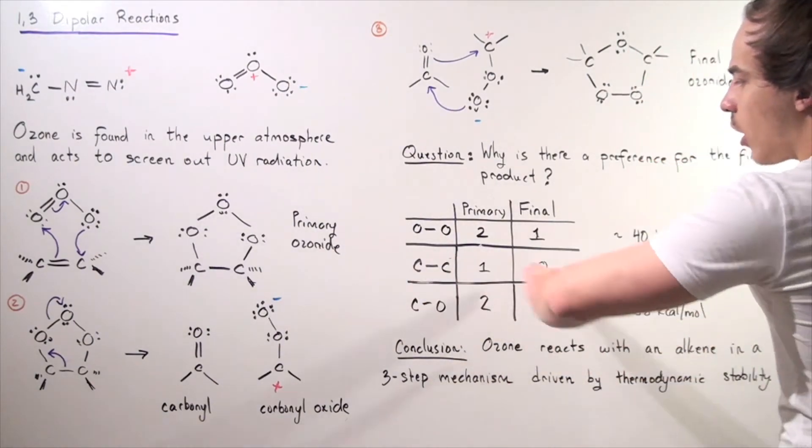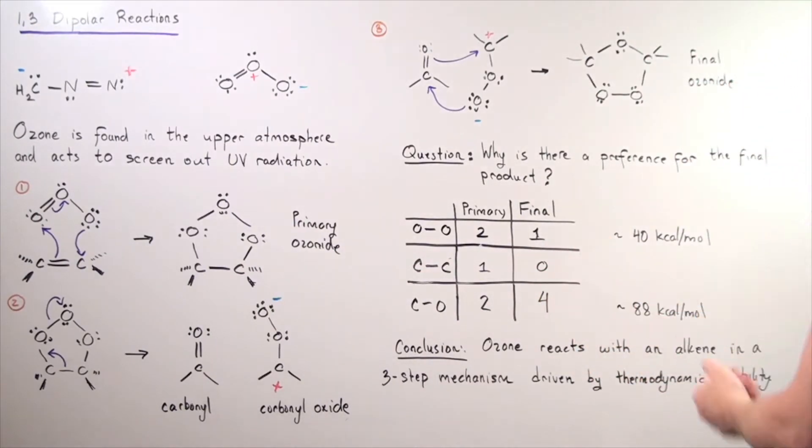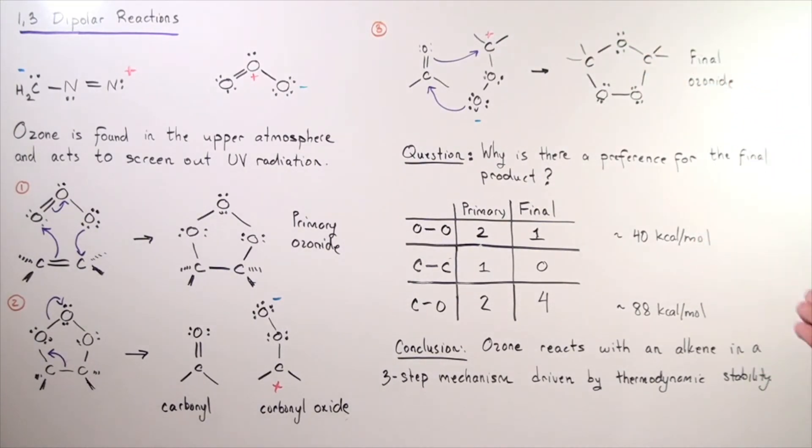So what about the carbon-carbons? Well, we have one in the primary, shown here, and zero, none in the final. Remember, we're only counting this cyclic ring here. We're not counting these bonds.